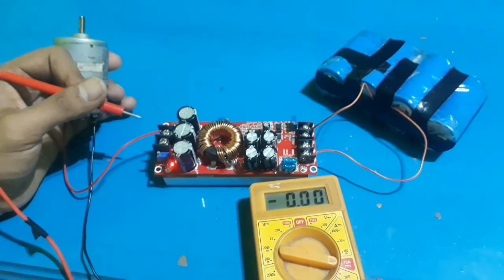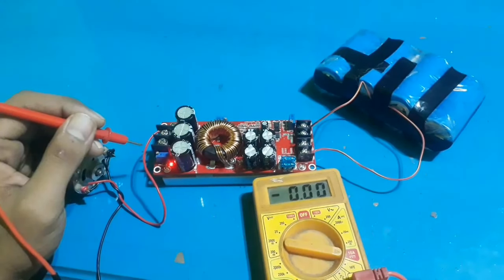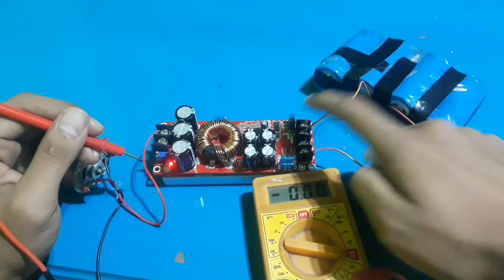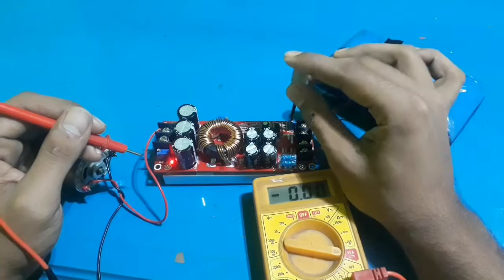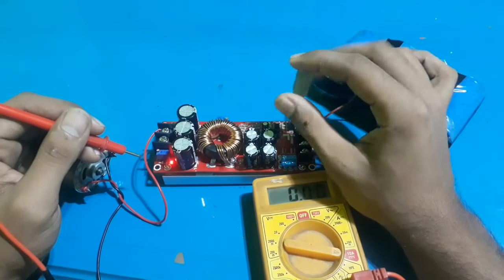Now to test the battery low voltage protection, I set the rheostat at maximum point and the output voltage is 20 volts. I'm rotating the potentiometer anti-clockwise until the LED will glow.